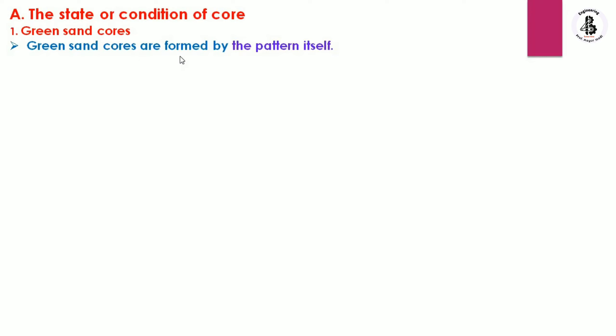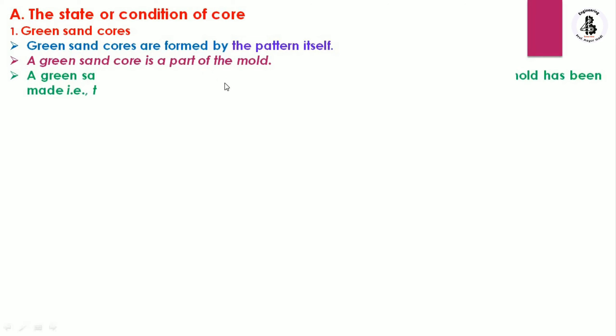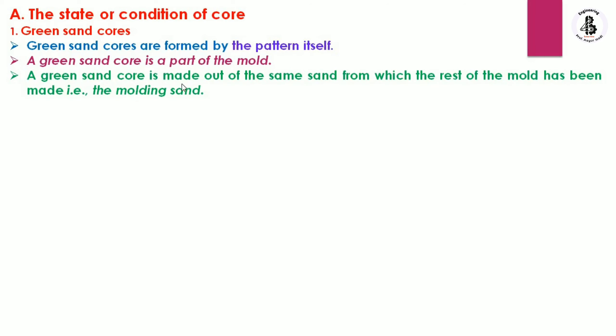The first category is the state or condition of the core. The first type is the green sand core. Green sand cores are formed by the pattern itself. A green sand core is a part of the mold, made out of the same sand from which the rest of the mold has been made — so for mold making as well as core making, the same sand characteristics are used in green sand cores.